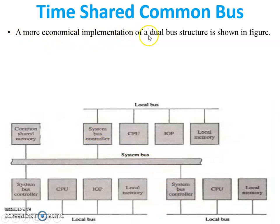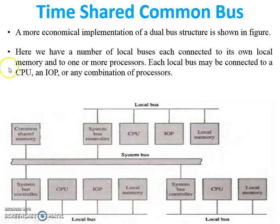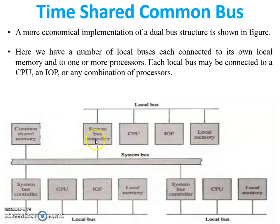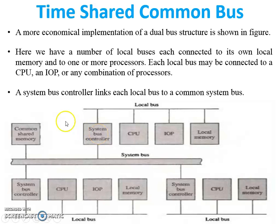A more economical implementation of a dual bus structure is shown in the figure. Here we have a number of local buses, each connected to its own local memory and to one or more processors. Each local bus may be connected to a CPU, an IOP, or any combination of processors. All local buses are connected with the CPU, IOP, local memory, and also with the system bus controller. A system bus controller links each local bus to a common system bus.